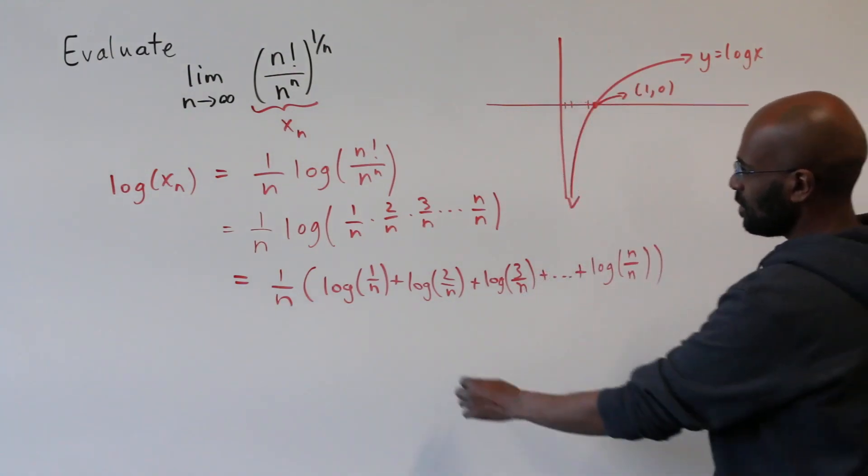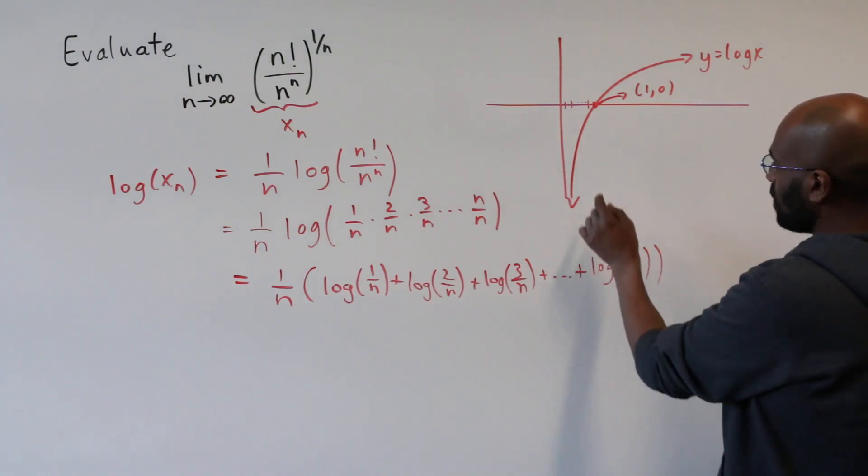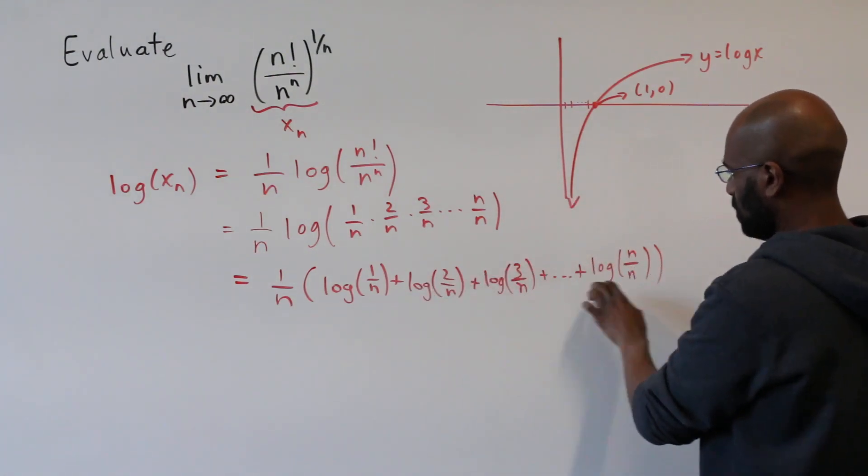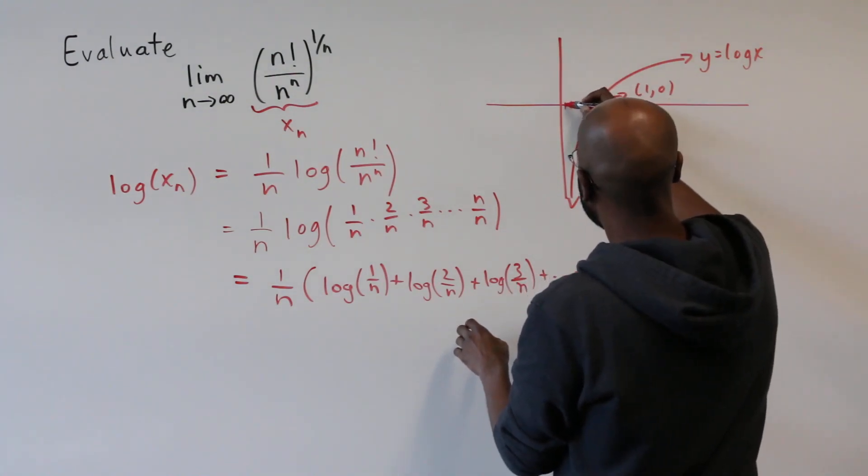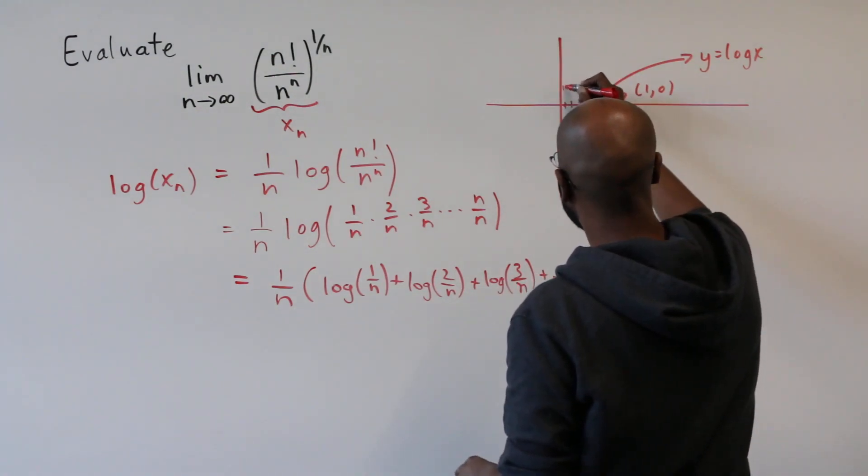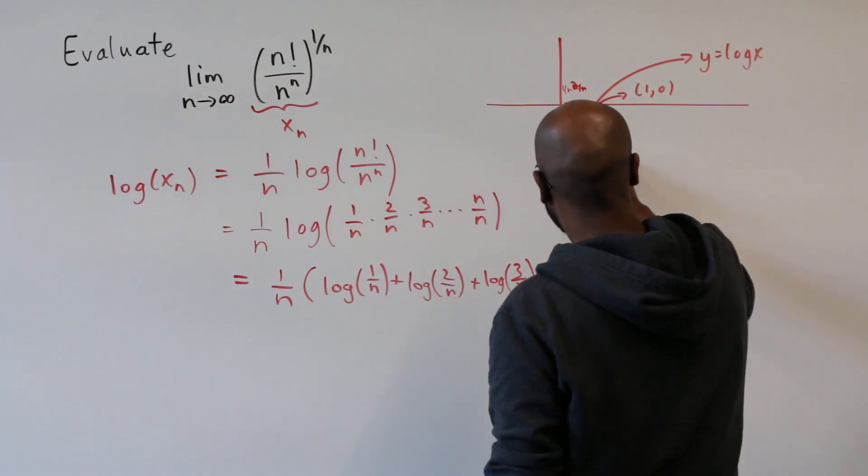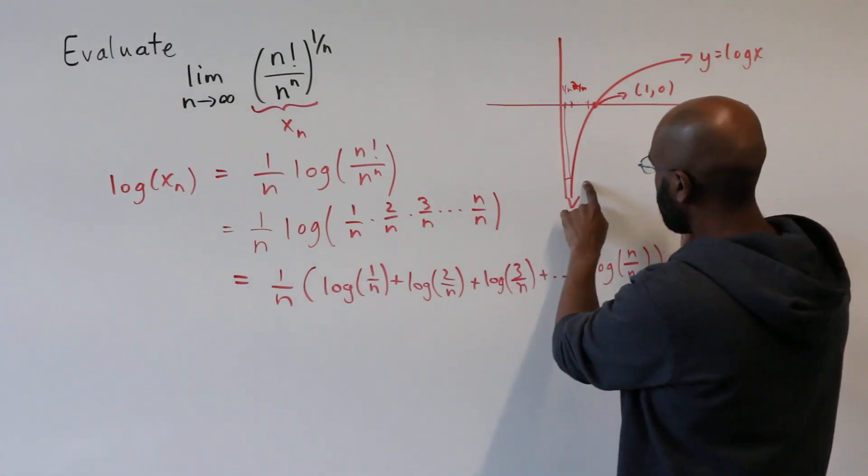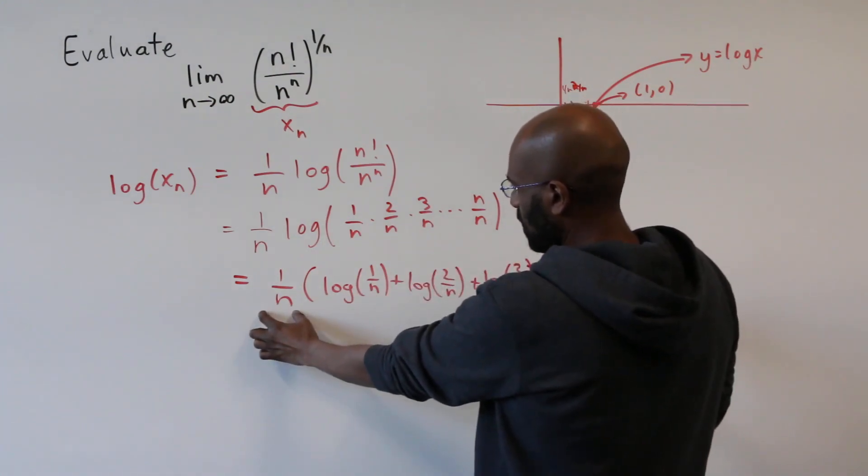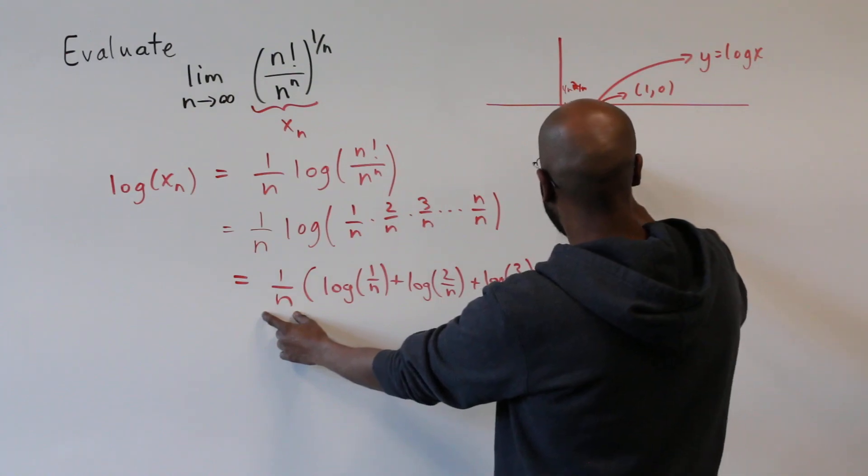And then we're taking heights of these different sizes, all based on these points. So say this point here was 1 over n, and this was 2 over n. Then we have something like a rectangle of height 1 over n. And then this 1 over n is the length of this base. So we have the area of this rectangle right here.